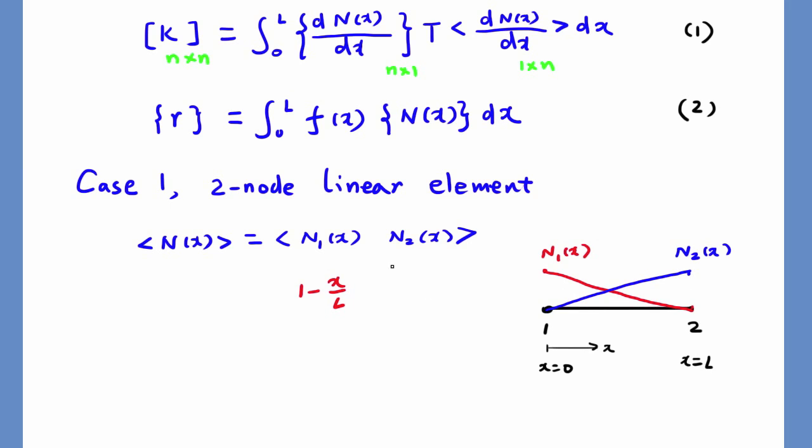The shape function can be written as 1 minus x over L. We also need to construct shape function N2(x) to be x over L.